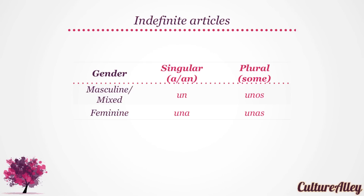Let's look at these forms in detail. With masculine or mixed noun in singular form, a or an translate as un. Un. While with masculine or mixed nouns in plural form, it becomes unos. Note that with plural nouns, we use some in English, which translates to unos in Spanish. With feminine nouns in singular form, a or an translate to una. Una. While with feminine nouns in plural form, we use unas. With plural forms, we use some in English, which translates to unas for feminine forms in Spanish. So, un and una for singular forms, and unos and unas for plural forms.